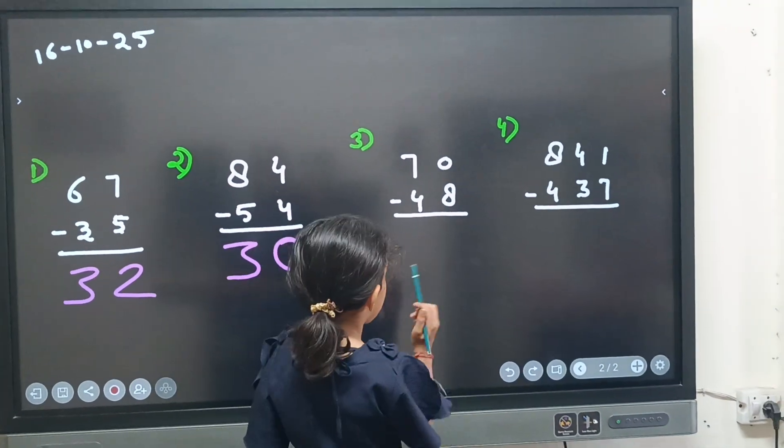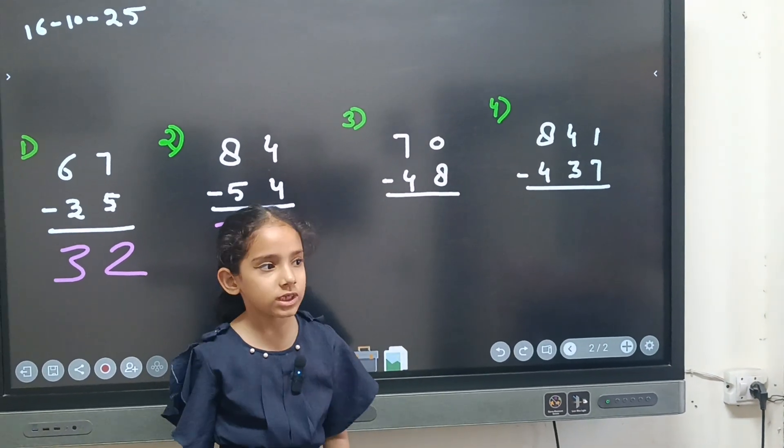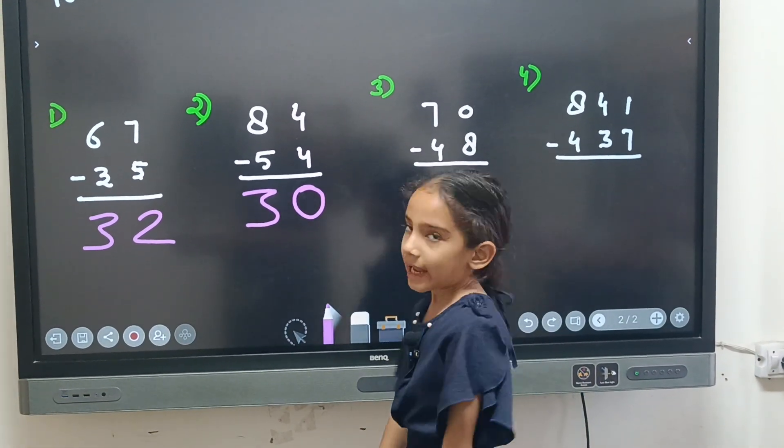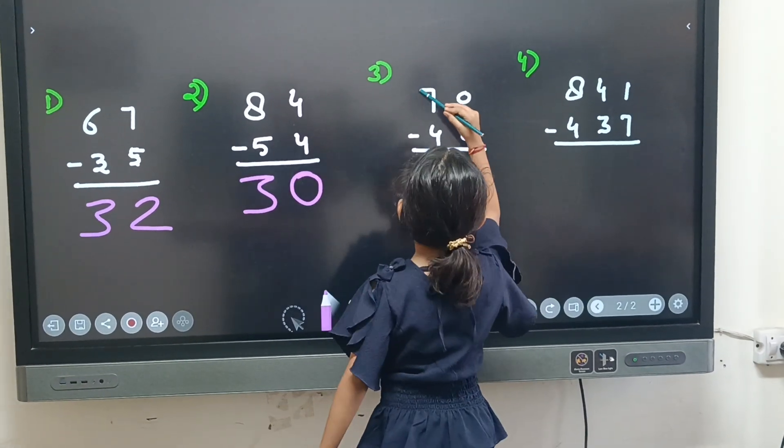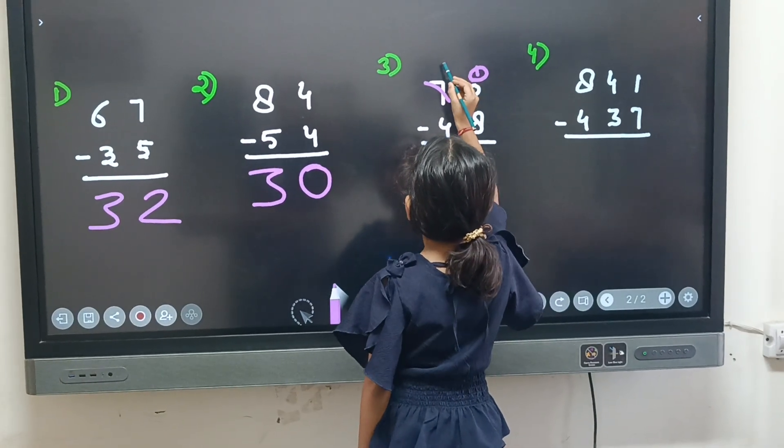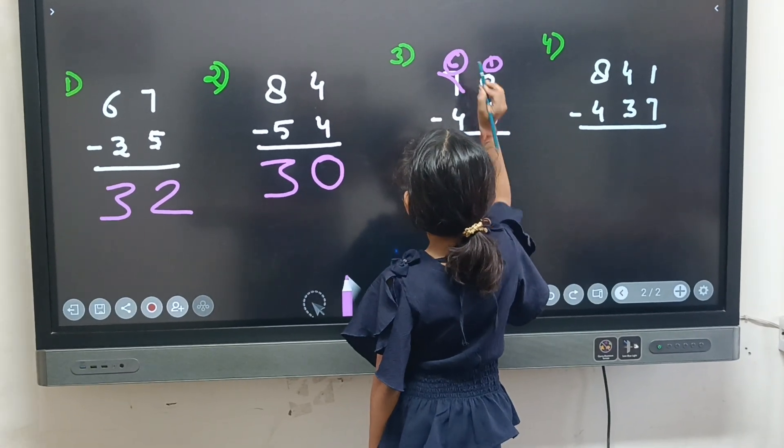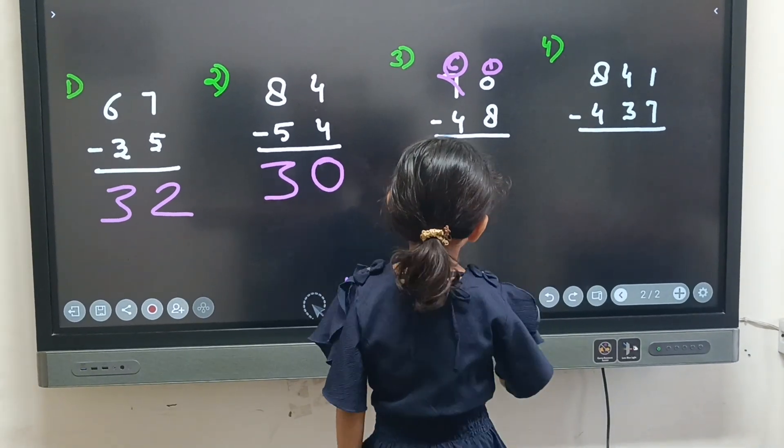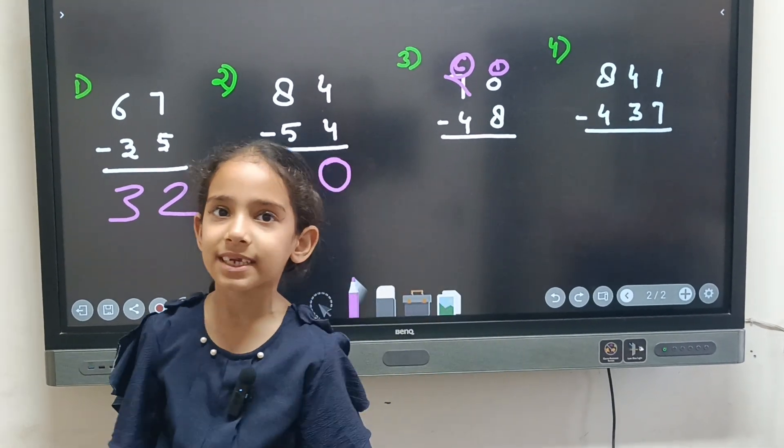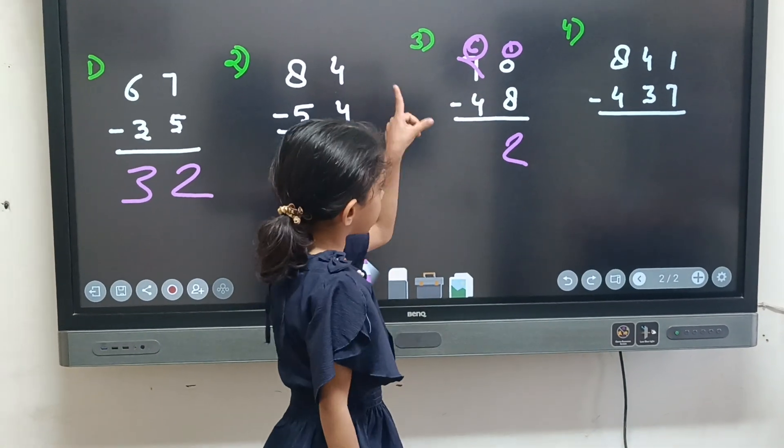Next question, 70 minus 8. Now look at first question. 0 minus 8. 0 is bigger or 8 is bigger? 8 is bigger. But 0 is in front. What we will do? We borrow 7 and take 1 and 7 becomes 6. Now we will solve 10. Now 9, 10. How many fingers raise? 2. So answer is 2.